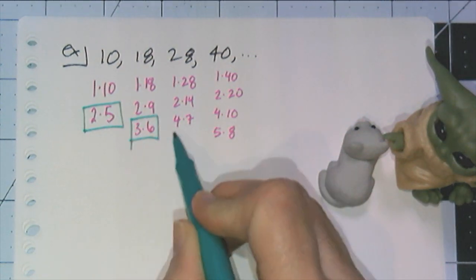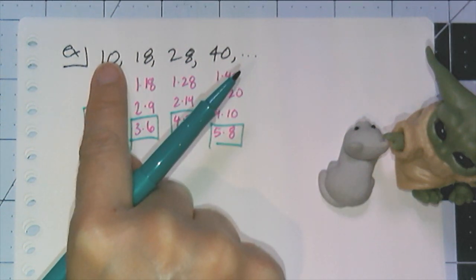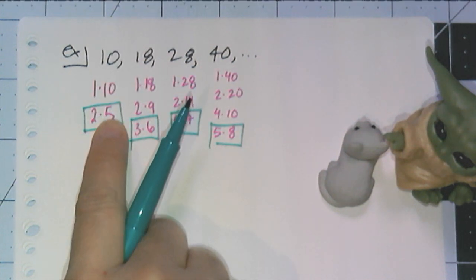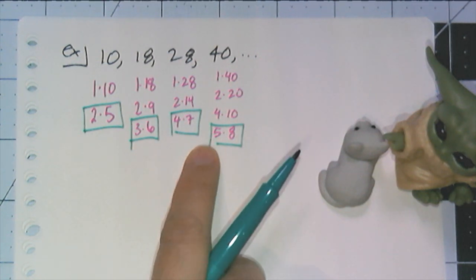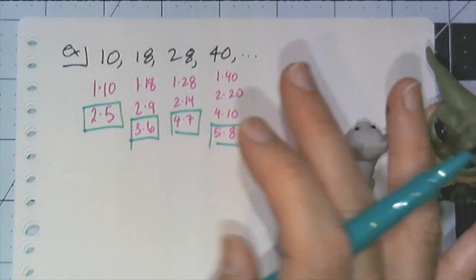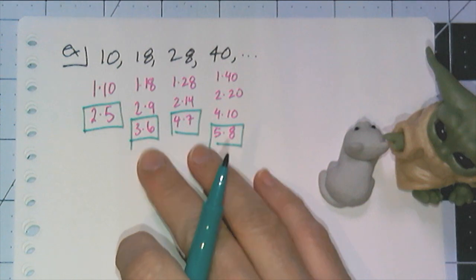So really, this sequence of numbers is a set of rectangular numbers. This starts with the 2 by 5, so like 2 rows, 5 columns, 3 rows, 6 columns, 4 rows, 7 columns, 5 rows, 8 columns. Now I'm not actually going to draw the rectangle because that's not my purpose. My purpose is to write a rule for this.